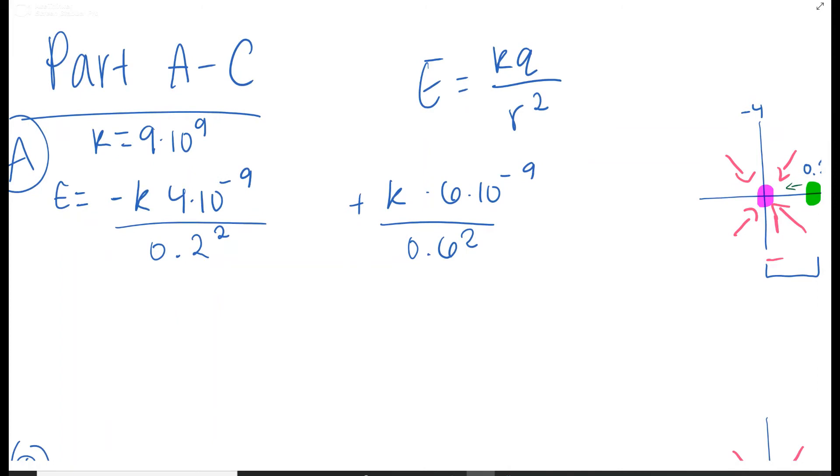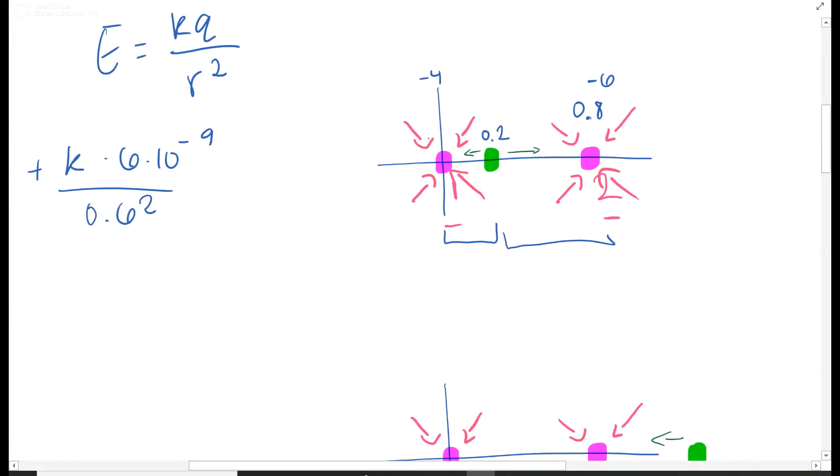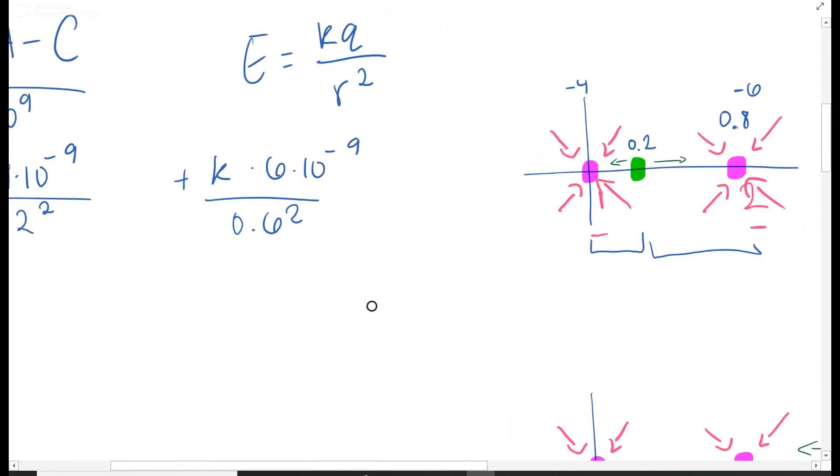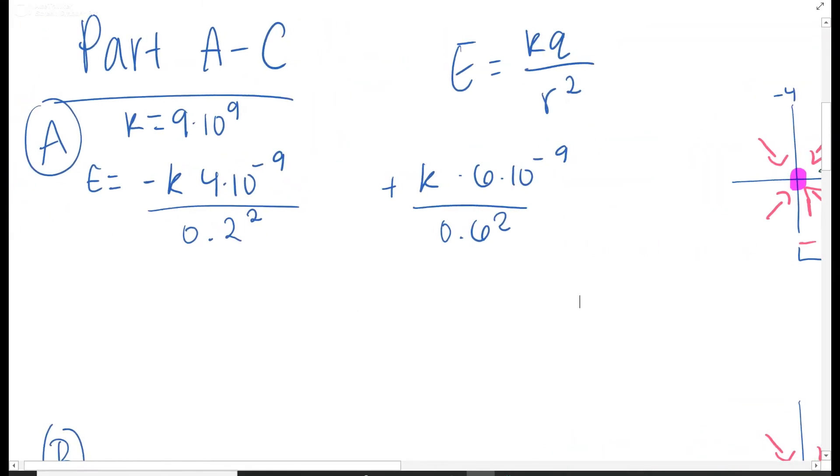And electric fields go towards negative values. So right here at this point, it's going towards the left, which is why I have negative. And then it's being dragged towards the right, which is why I have positive right here. So that's where I'm getting my signage. And then you solve that and get E equal to negative 749 newtons over coulombs.